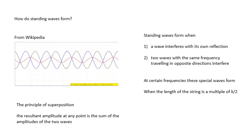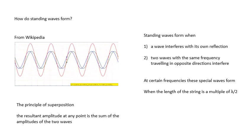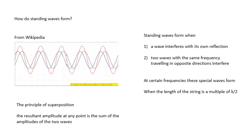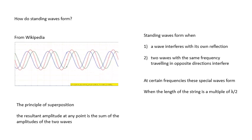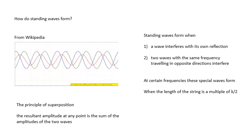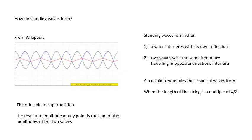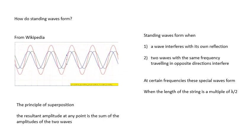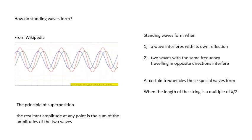But we only get them at certain frequencies. In the case of a guitar string, then the length of the string has to be a multiple of loops. And each loop is half a wavelength. So we only get standing waves at certain frequencies.